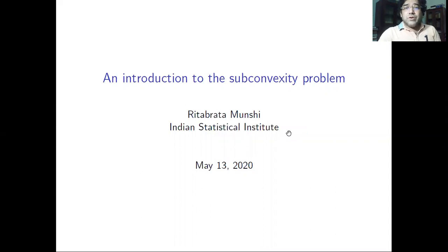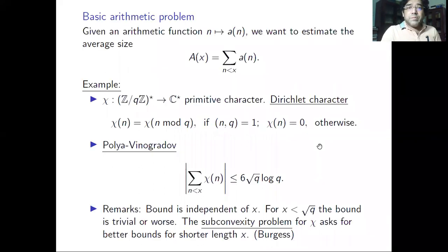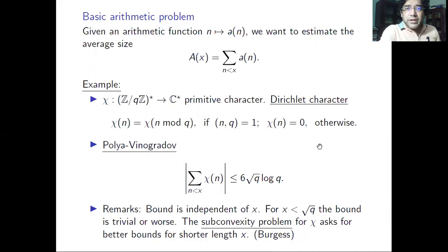In today's talk, I'm going to describe the basic tools which I use in proving subconvex bounds, and I'm going to give two different proofs of a particular subconvexity problem. Let's start with the very basic arithmetic problem — in most analytic number theory problems, it boils down to estimating certain sums.